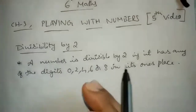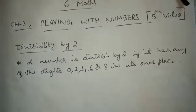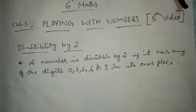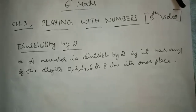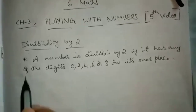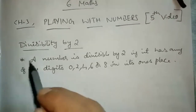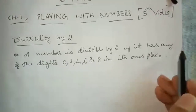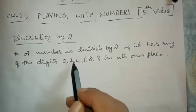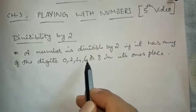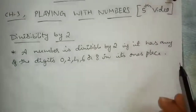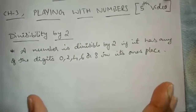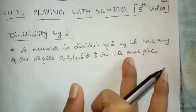Without actually dividing, by seeing the number itself, you have to say whether it is divisible by 2 or not. A number is divisible by 2 if it has any of the digits 0, 2, 4, 6, or 8 in its ones place. So if you have been given any number, you have to see the units place.